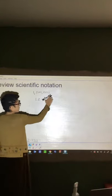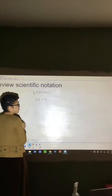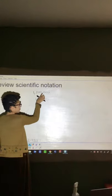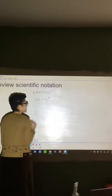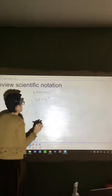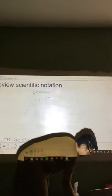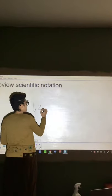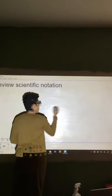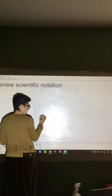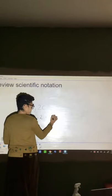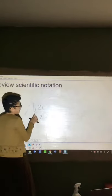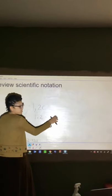In scientific notation, you calculate how many decimal places you have to move the decimal point. If the number is 1,200,000 — that's 1.2 million — you count the decimal places: one, two, three, four, five, six. This would be raised to the sixth power. That's how you display 1.2 million in scientific notation. The exponent tells you how many times you moved the decimal place.